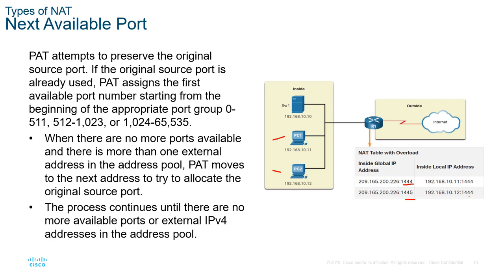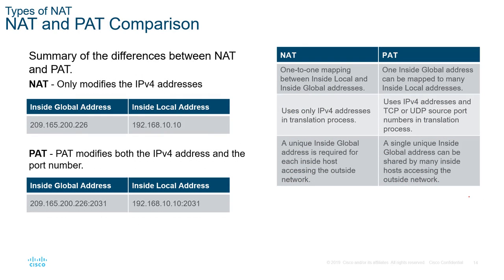Let's look at a comparison. With NAT, we have inside global and inside local. With PAT, it's essentially the same except we're adding port numbers. So we have our inside global address — our public address — and our inside local, which is our private. With PAT, we tack on port numbers so we can ensure the correct channel is using the correct port and that port is forwarded to the correct internal address.